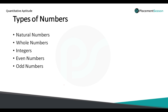We have different types of numbers. The first one is natural numbers. Natural numbers are usually represented as N and they start from 1, 2, 3 and go on. For whole numbers, it includes 0 plus natural numbers: 0, 1, 2, 3 and goes up to infinity.